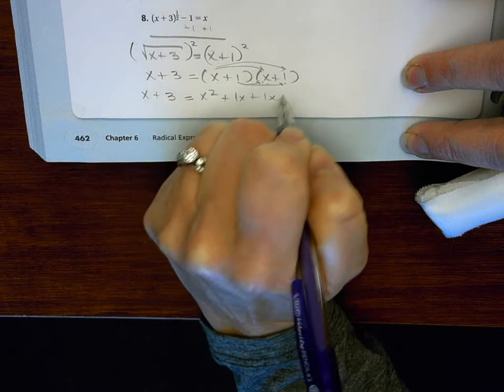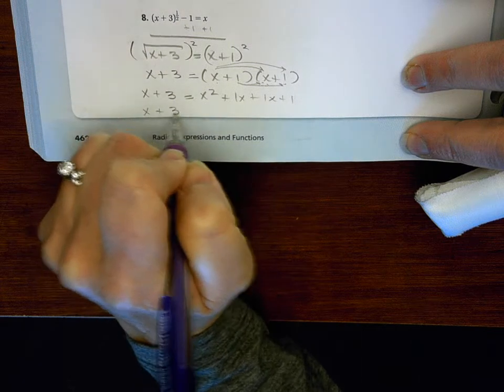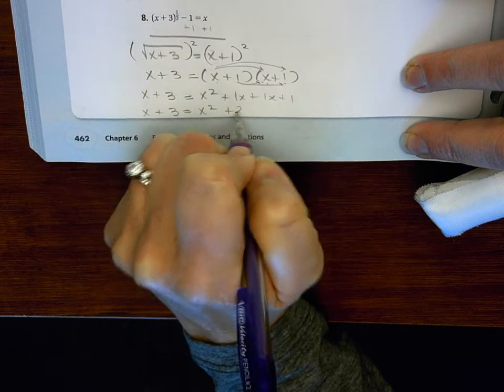And then distribute the 1 to both. So that would be 1x plus 1. And I'm going to combine like terms. So 1x plus 1x.